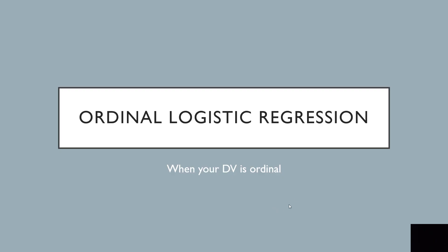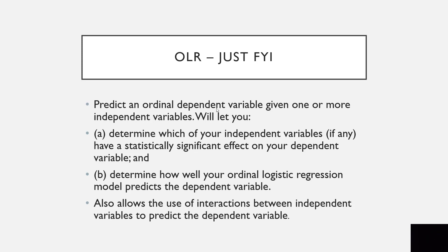One additional note: we can also do ordinal logistic regression when your dependent variable is ordinal — for example, strongly disagree, disagree, agree, strongly agree. This allows you to determine which independent variables have a statistically significant effect on an ordinal DV, how well the model predicts it, and also allows for interactions between independent variables. For now, we are sticking with binomial logistic regression.